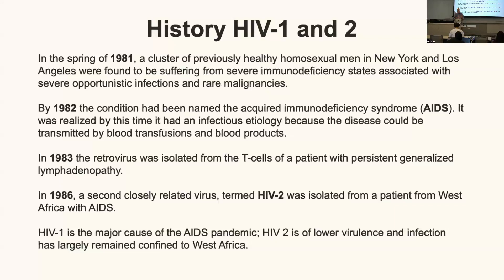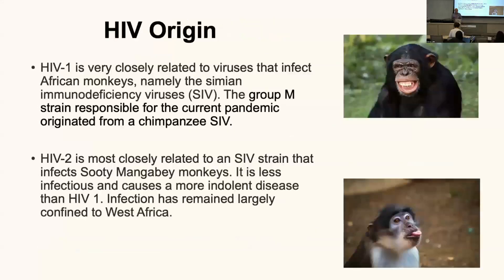When we talk about HIV, we're almost always talking about HIV-1, because that's the cause of the AIDS pandemic. HIV-2 exists — it's lower virulence, doesn't make people as sick, and has really stayed endemic to just one region in West Africa. So where did it all come from? It's very closely related to viruses that affect African monkeys. Through phylogenetic tracking and gene evolution studies, it's been traced back to simian immunodeficiency virus (SIV), and we think the HIV global pandemic originated from a virus endemic in chimpanzees — one of those zoonotic transmission events, much like we had with COVID.